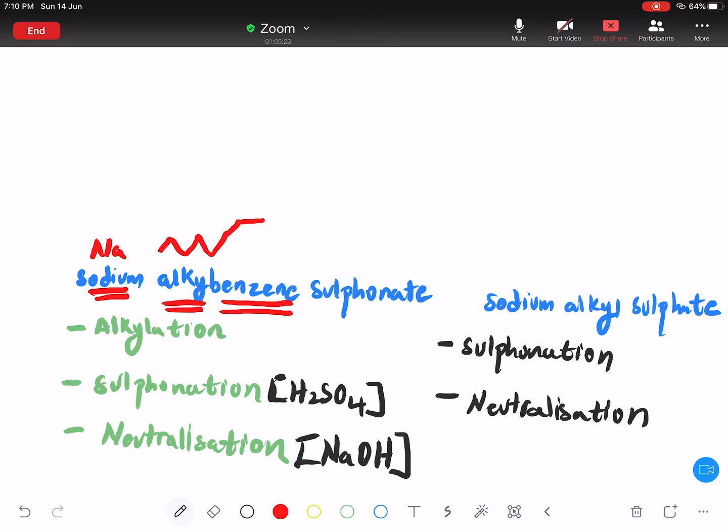Dan juga sulfonate ni apa? Sulfonate ni sulfuric acid. Jadi kau kena ingat SO4 2 minus. Sekarang ni, apa yang kita nak buat? Kita nak ambil sodium, alkyl benzene dengan sulfonate. Kita nak gabungkan dia jadi satu, jadi satu detergent. Nah, jadi satu detergent. Macam mana?